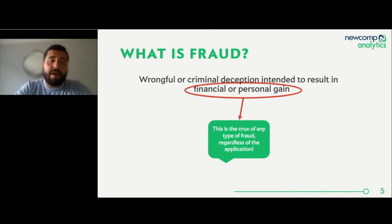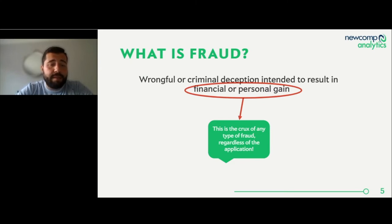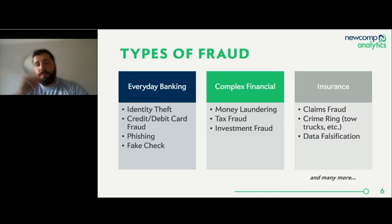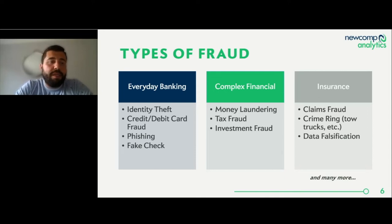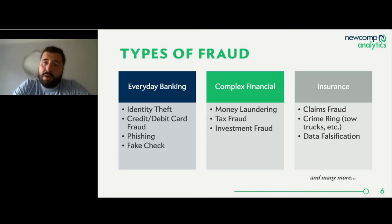That essentially is the crux of detecting fraud — tying it back into what is the personal or financial gain. We have tackled three big types of vendors in the financial industry. One is everyday banking: things like identity theft, credit and debit card fraud, phishing, and fake checks. Looking at identity theft — how do we determine when somebody's identity has been stolen? We can do this by building a customer profile and then looking at what they're trying to do.